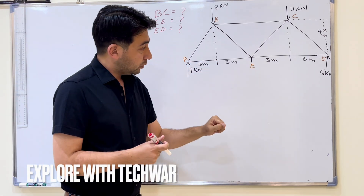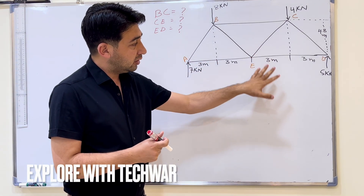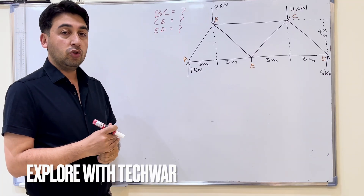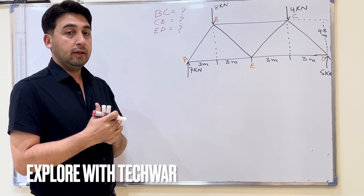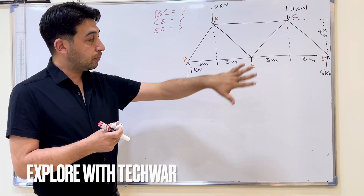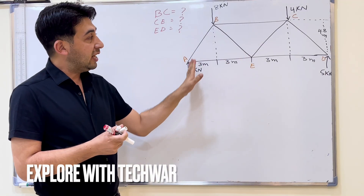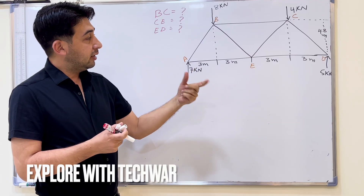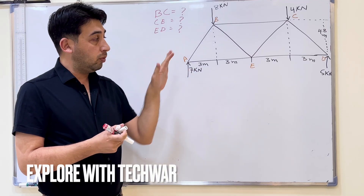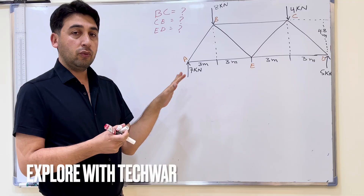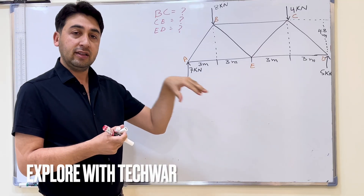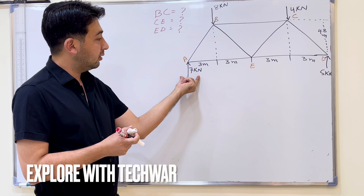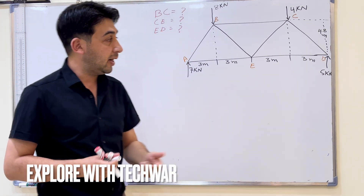I will show you the steps we will be using in the method of section. The first step, similar to the method of joints, is to label the truss, which we have already done. The second step is to find the global reaction forces. The reaction forces are already given — 7 kN and 5 kN — so no need to find them.